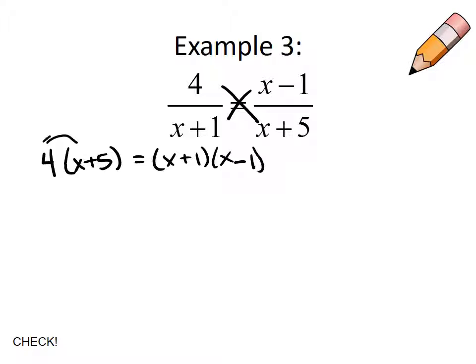Make sure that if you have a value up front that you're using the process of distribution. If you have a binomial times a binomial, you need to use FOIL.